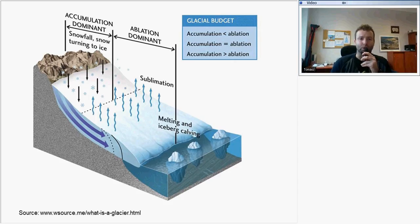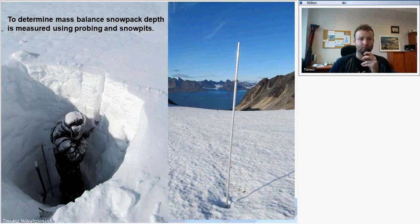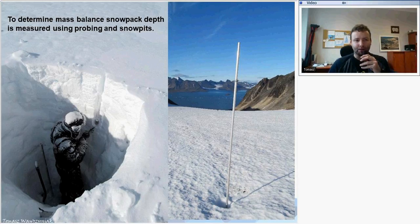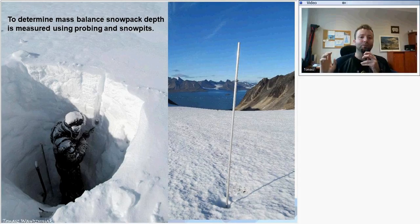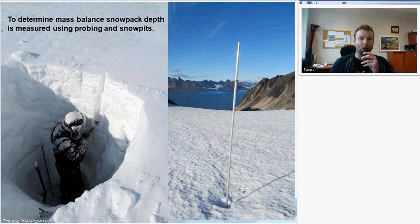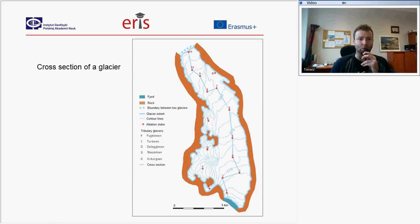In terms of measuring mass balance and snowpack depth, we measure snow cover using probing and snow pits — we dig through the snow to reach the glacier ice. We then measure the density of snow to get information about snow water equivalents: how much water would melt from a given thickness of snow or ice.